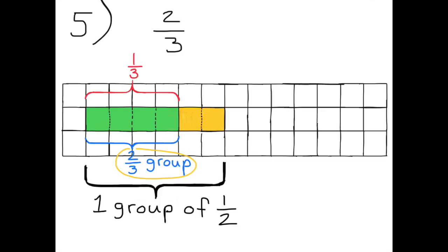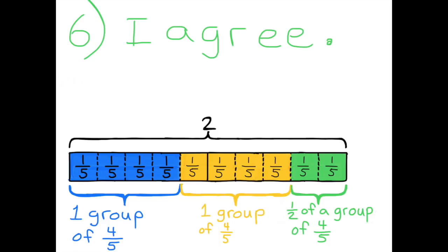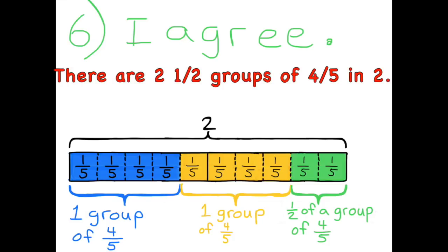Number six: Noah says there are two and a half groups of four-fifths in two. Do you agree with his statement? Draw a tape diagram to show your reasoning. On this graph paper I've colored in every square — four blue squares, four yellow squares, and two green squares — all together representing two. The blue group is one group of four-fifths, the yellow group is another group of four-fifths, and the green group has only two out of four squares, representing one-half of a group of four-fifths. There are two and a half groups of four-fifths in two.